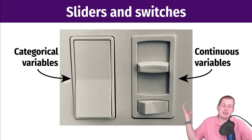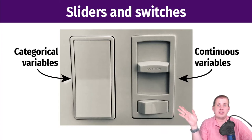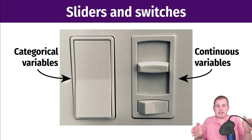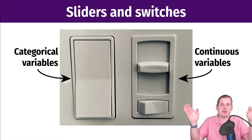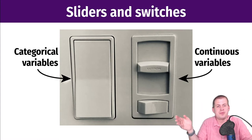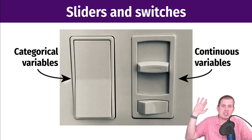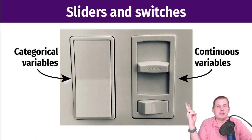Going back to the analogy from session two: you can have two different types of variables in a regression model. You can have categorical variables — binary categories like on/off, or a five-point scale like strongly disagree to strongly agree. You can also have continuous variables, which are just numbers like life expectancy, health, or malaria risk — actual numbers with continuous values.